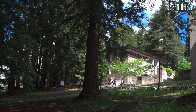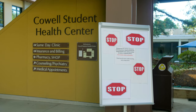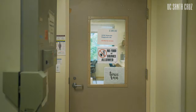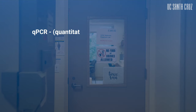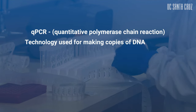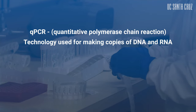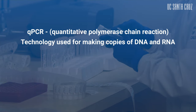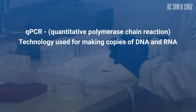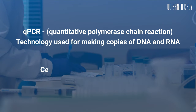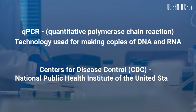Our expectation is that we will continue to provide such emergency testing through the pandemic. A qPCR stands for Quantitative Polymerase Chain Reaction and is a technology used for making copies of DNA and RNA. By doing this, the quantity of DNA, or in this case RNA, can be measured. Testing on a qPCR device is consistent with a Centers for Disease Control, or CDC, approach.